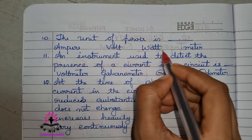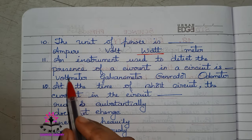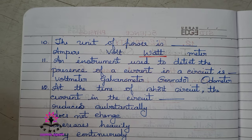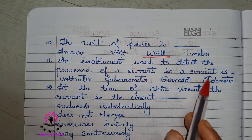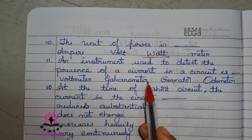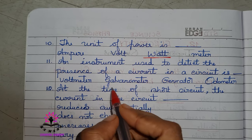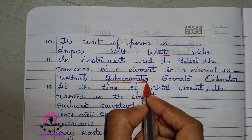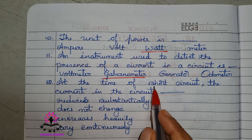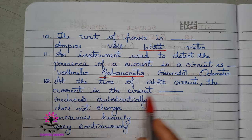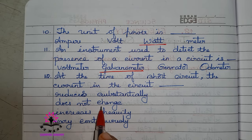An instrument used to detect the presence of current in a circuit — it is not the voltmeter nor ammeter. The right answer is galvanometer. A galvanometer is used to detect the presence of current.